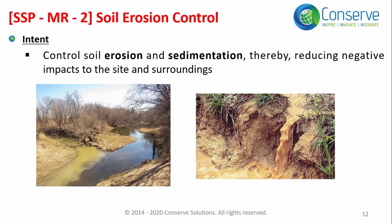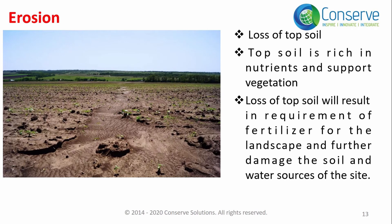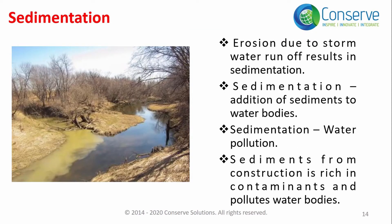The next mandatory requirement is soil erosion control. The intent is to control erosion and sedimentation and thereby reduce negative impact to the site and surroundings. Erosion is a loss of topsoil — topsoil is rich in nutrients and supports vegetation. Loss of topsoil results in requirements for fertilizer for landscaping and further damages soil and water sources. One of the main reasons for erosion is stormwater runoff, which results in sedimentation — the addition of sediments to water bodies — and is a form of water pollution.